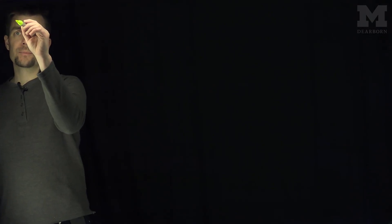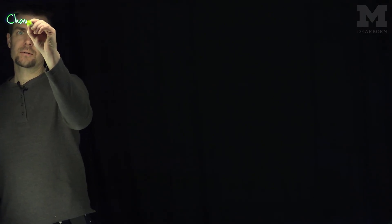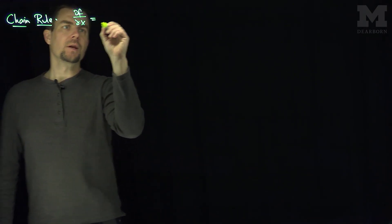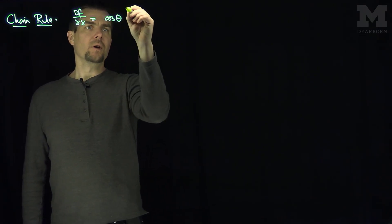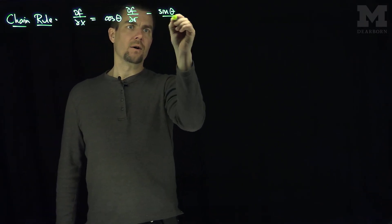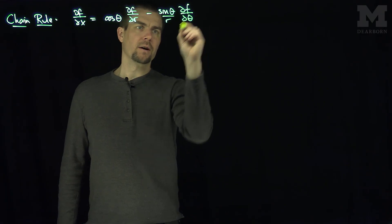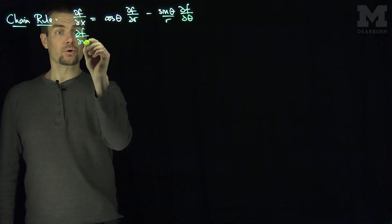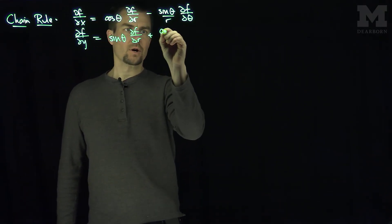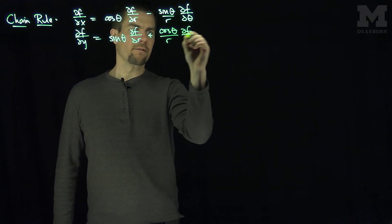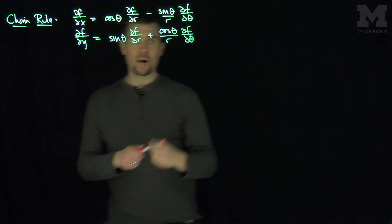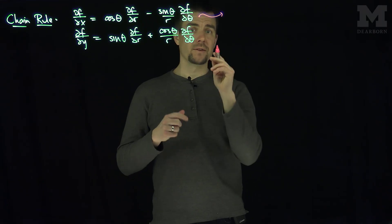From a previous video we know the following relationships. The chain rule tells us that ∂f/∂x is cosθ · ∂f/∂r minus (sinθ)/r · ∂f/∂θ. And ∂f/∂y is sinθ · ∂f/∂r plus (cosθ)/r · ∂f/∂θ. These come from the chain rule — you can watch the previous video to see how to derive these yourself.